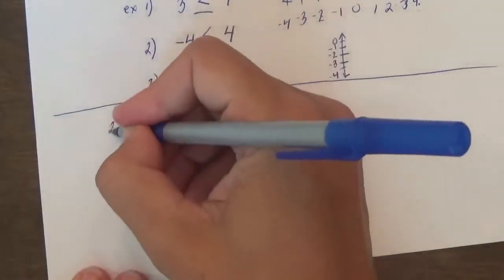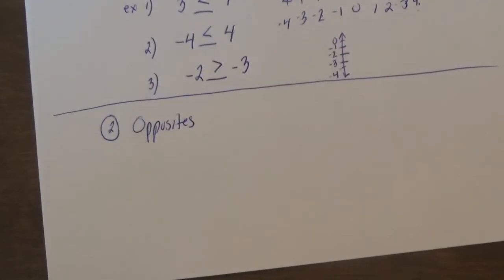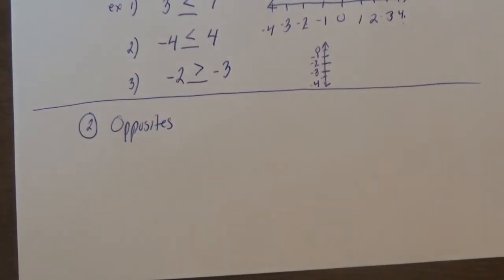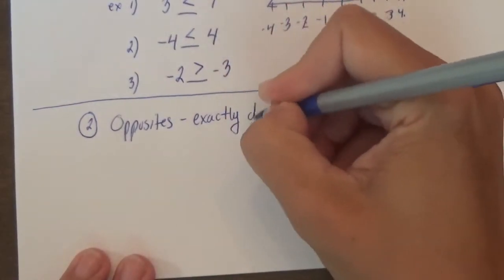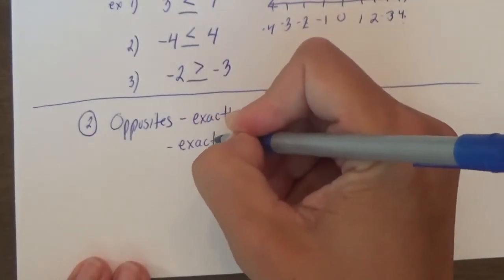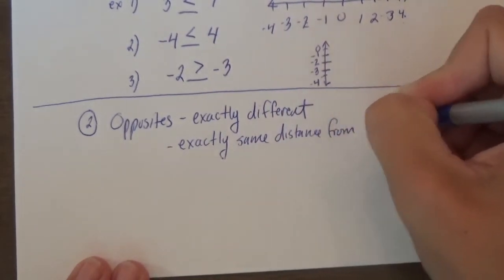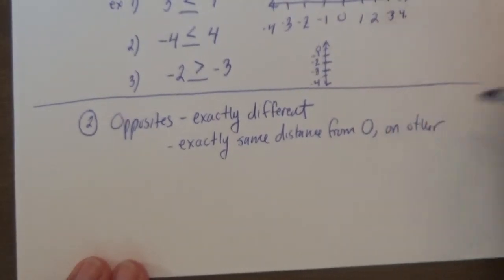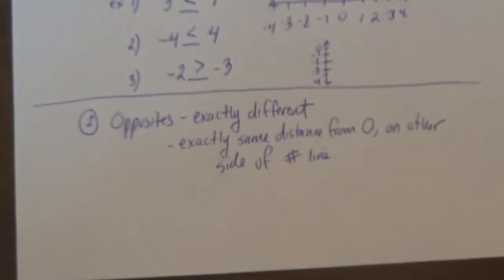The next thing we had to learn was opposites. So how do you explain the word opposite without using the word opposite? Let's pause and discuss. There were some good answers. But my favorite is exactly different. And mathematically what they say is exactly same distance from zero, same distance from zero, but on the other side of the number line. That's number line, not hashtag line.